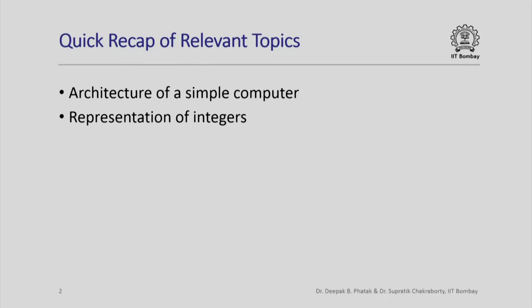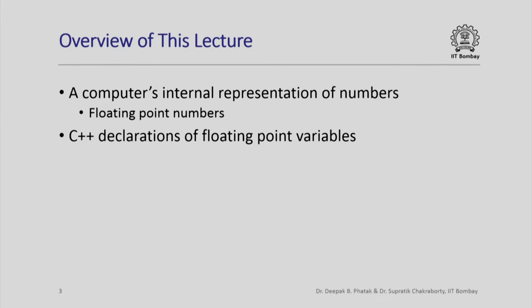Hello and welcome. In this lecture we are going to see how floating point numbers are represented inside a computer. Here is a quick recap of the relevant topics. We have already seen the architecture of a simple computer and in a previous lecture we also looked at how integers, both signed and unsigned, are represented in a computer. In this lecture we are going to see how a computer internally represents floating point numbers and how in a C++ program you can declare floating point variables.